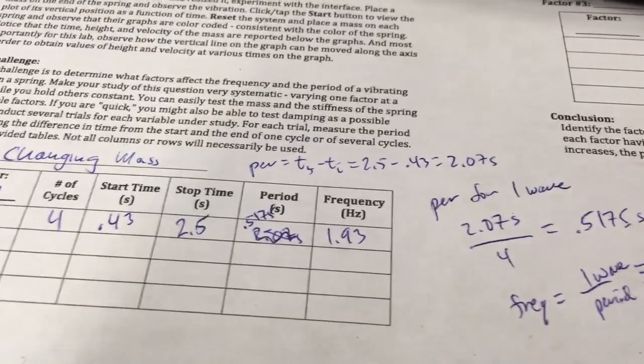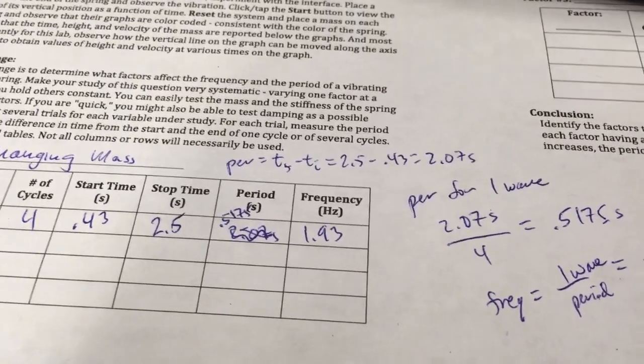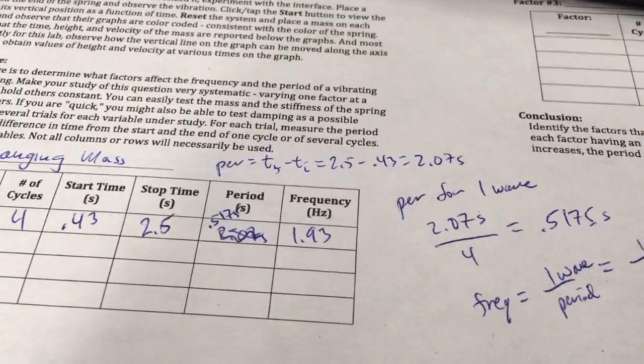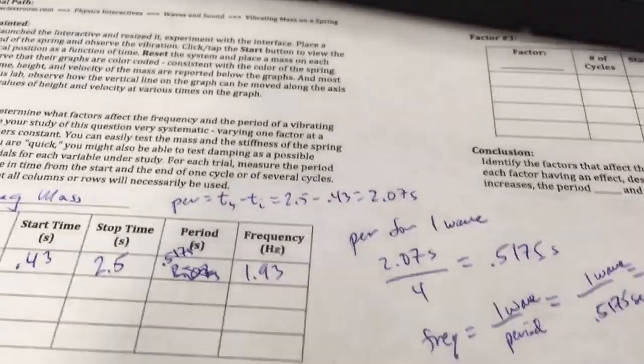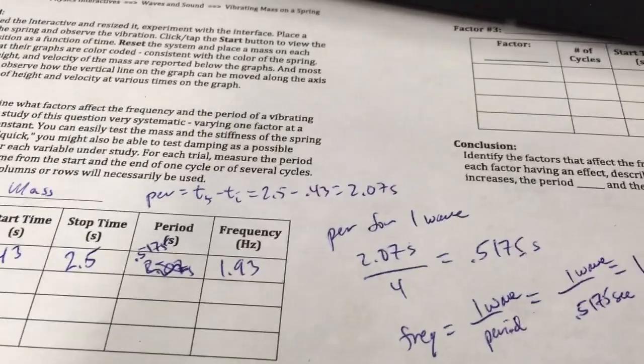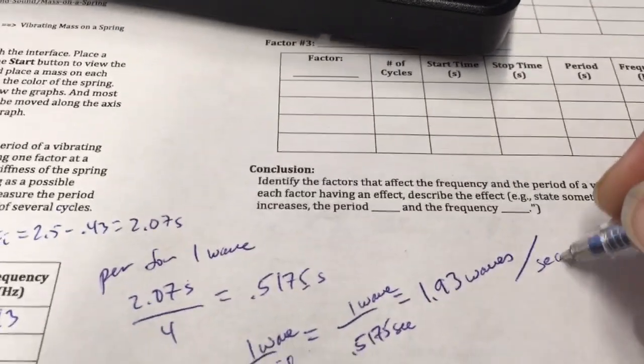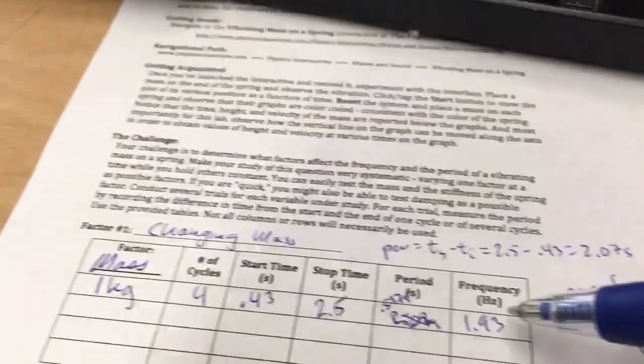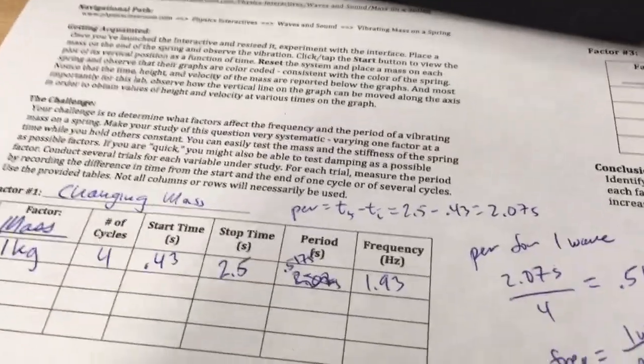All right. So this is 1 wave. So there's going to be 1 wave per 0.5175 seconds. And so the frequency is waves per second. And so that's what this means. Hertz. It's in waves per second.